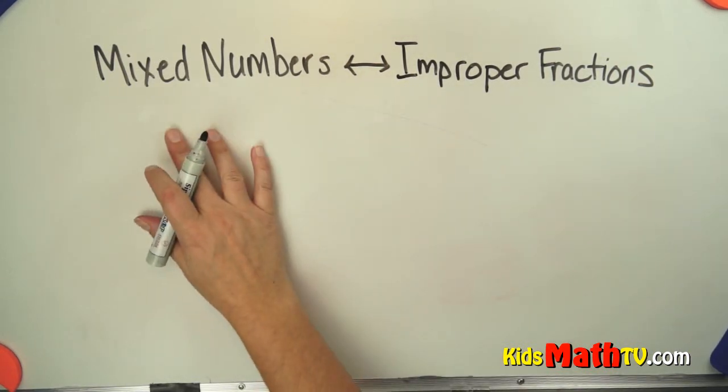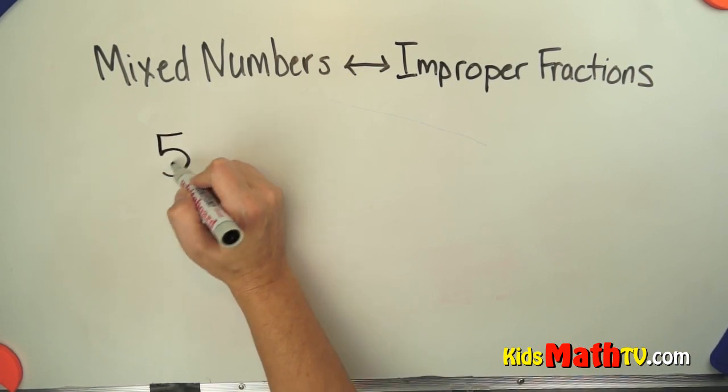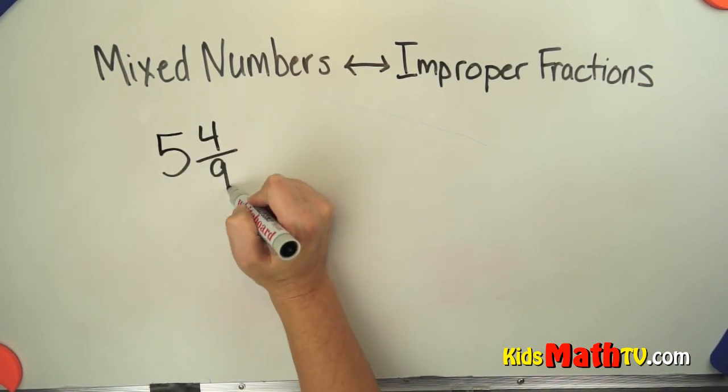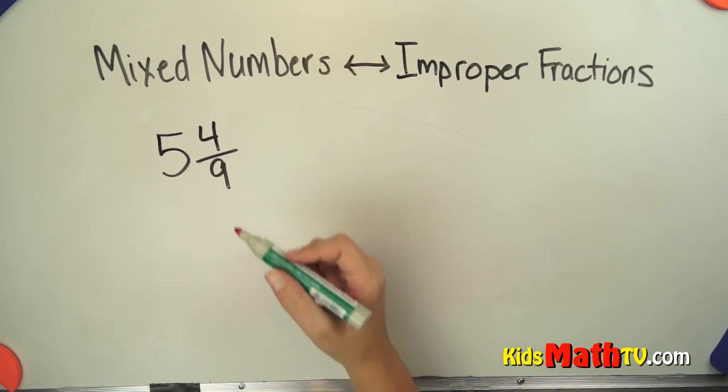So if we start with a mixed number, a mixed number is a whole number, 5 and 4 ninths, we can make that into an improper fraction.